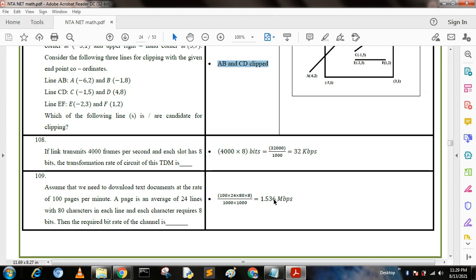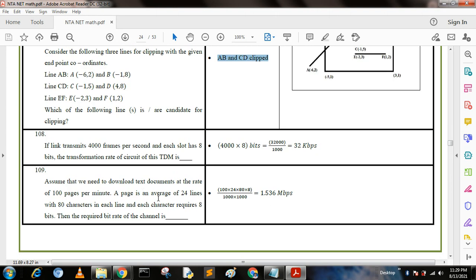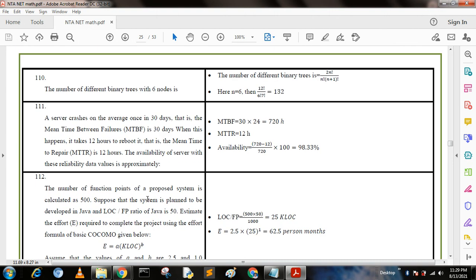Next question: The number of different binary trees with six nodes. To calculate this value, we remember the formula: 2n factorial divided by (n factorial times (n+1) factorial). We put the value n equals 6, then we get 12 factorial divided by (6 factorial times 7 factorial) equals 132.